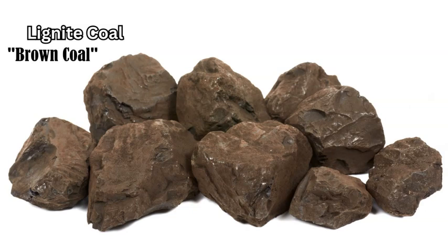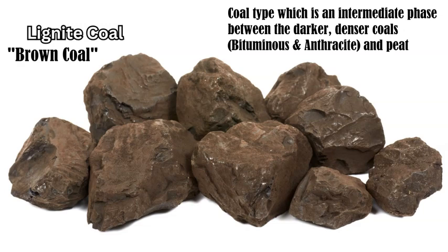Lignite is our final and fourth type of coal, which sits in rank between peat and sub-bituminous. It is truly the intermediate phase of coal formation before it progresses into the darker, denser, higher energy output coals like bituminous and anthracite. It takes less time to form during its grade of metamorphism, or coalification, on its pathway from the original plant material and fauna deposited in paleoclimates and paleo-environments 300 million years ago, into peat — the first stage of that metamorphism.